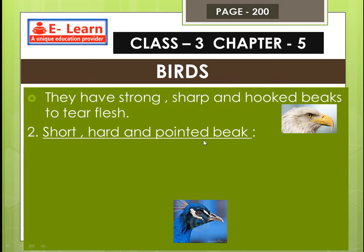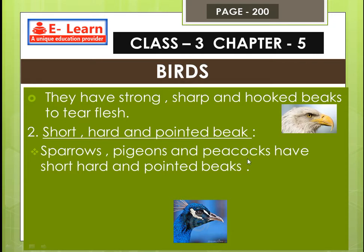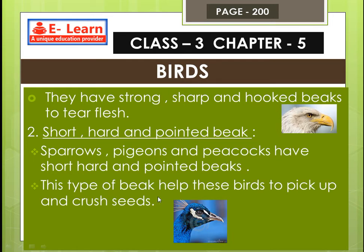Number 2: short, hard, and pointed beak. Sparrows, pigeons, and peacocks have short, hard, and pointed beaks. You can see this in the picture. This type of beak helps these birds to pick up and crush seeds quickly.